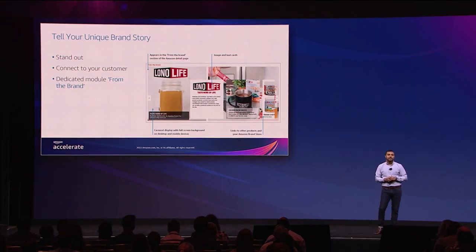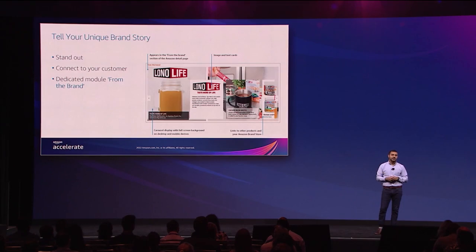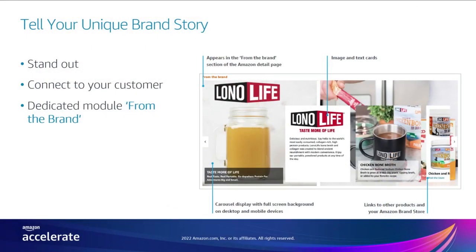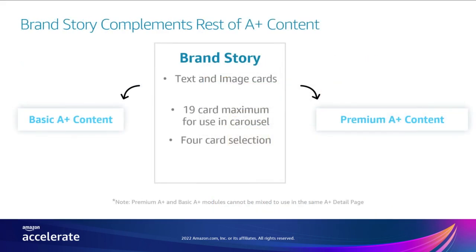Brand story modules support full-screen background display along with image and text card carousel, which you can use to highlight key elements of your brand such as logo, brand picture, and brand description. Brand story is also a great way to help shoppers discover your broader catalog — you can link your other products within it, for example your best sellers or any new product launches. You can also use brand story to drive traffic to your Amazon brand store by embedding a link to it. Brand story can be used along with basic and premium A-plus, and you should think of it as a powerful complement to product description. Remember, shoppers are not only evaluating your product, but also your brand.